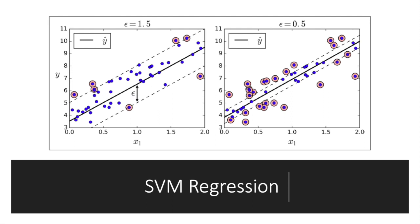In this figure, you see two linear SVM regression models trained on some random linear data. This is what we're going to see in this hands-on practice. One with a large margin epsilon 1.5 and the other with a small margin 0.5. Adding more training instances within the margin does not affect the model's predictions. The model is epsilon insensitive.